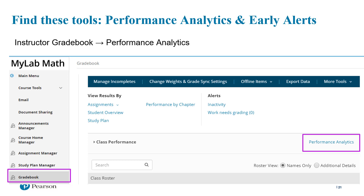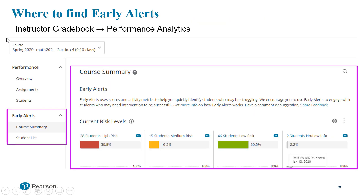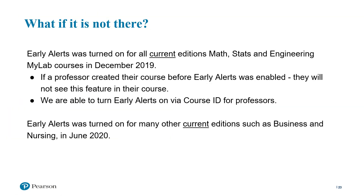Where do I find these? Both are located in your gradebook under performance analytics on the gradebook tab or under more tools. Early alerts was turned on for all current editions of Math, Stats, Engineering, and MyLab courses in December 2019. If you created your course prior to that, you will not see this feature. It is able to be turned on via course ID for professors. It was also turned on for many other current editions such as Business and Nursing in June 2020.